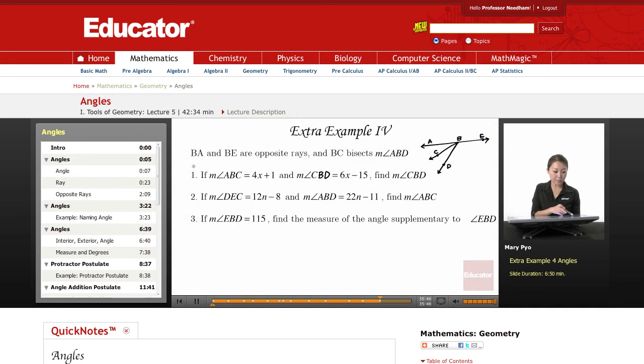Okay, the fourth example. BA and BE are opposite rays, and BC bisects measure of angle ABD.